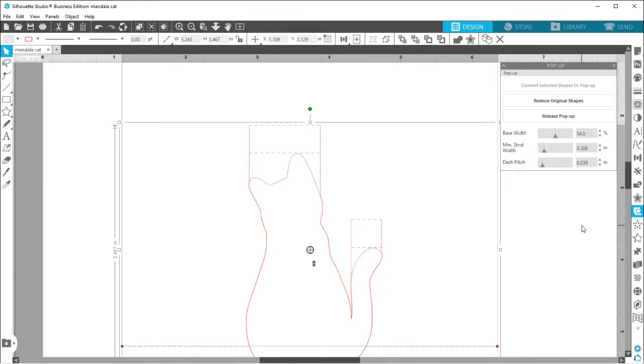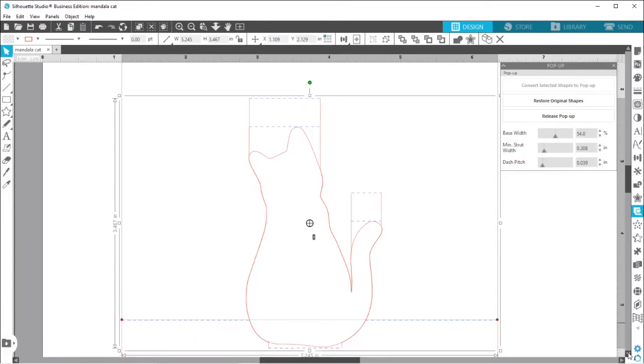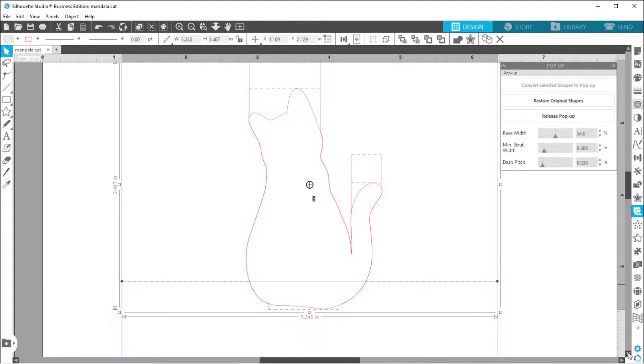If you decided you did not want to use this element, you could hit restored original shape that will get rid of all of the pop-up features, or you can also release pop-up. And then if you release your pop-up, you'll be able to edit these lines yourself. That is one of the advantages of having designer's edition or higher is that you can mess with those pieces yourself. I don't tend to do that because it gets a little bit complicated. So I usually just use the pop-up feature and go with it.